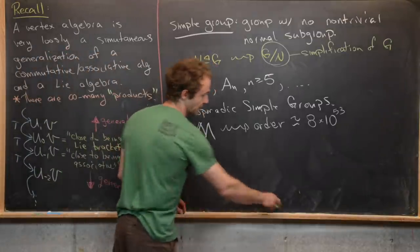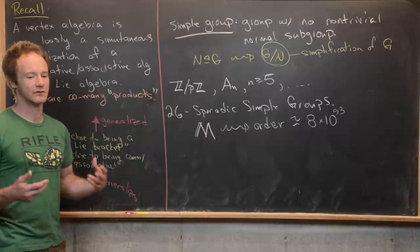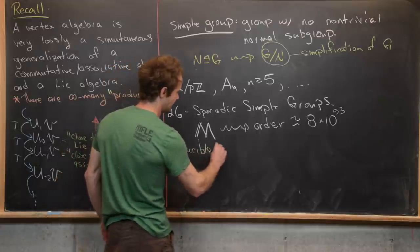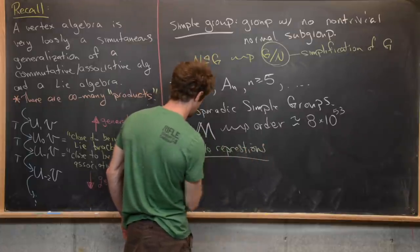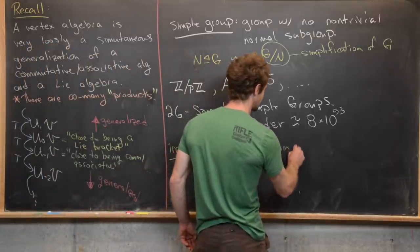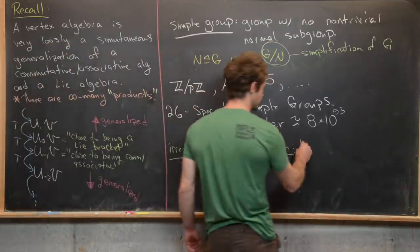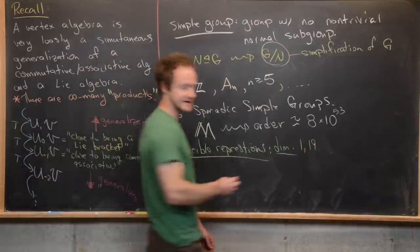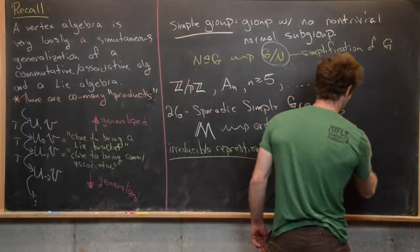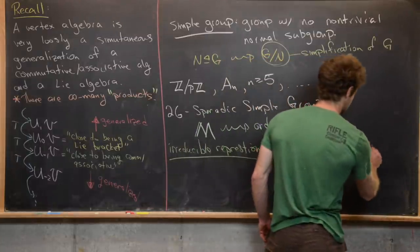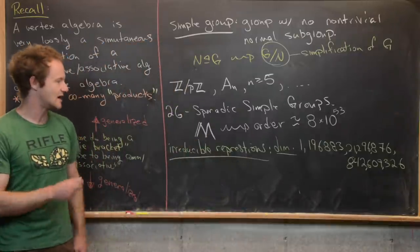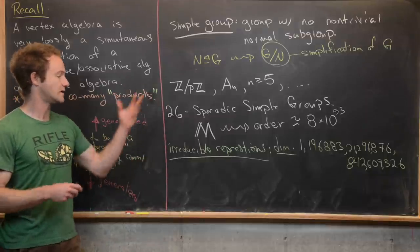So for any group, there is something called a representation of a group. And there are these so-called irreducible representations. And the irreducible representations have certain dimensions. So if you look at the irreducible representations of the monster group, you get the following dimensions for those irreducible representations. So you get one, and then the next one is 196,883. And then the next one is 21,296,876. And then maybe we'll write one more down. And so that last one, so that's like 842 million, and then some other stuff. So that is one fact.